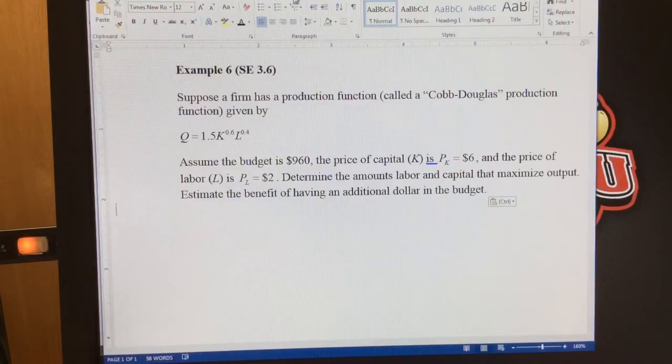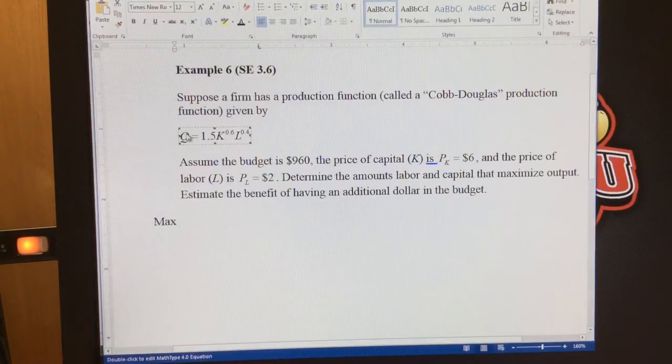So here's what we want to think about. The objective of this, as it says, is to maximize output. So if I were to write out my constraint, I would write out maximize, and I'm going to put this equation right there. That's what I'm trying to maximize.